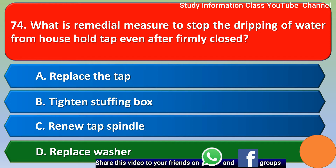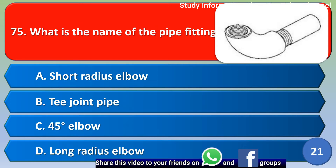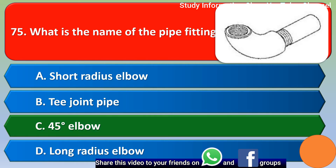Next question: What is the name of this pipe fitting? Option A: short radius elbow, Option B: T-joint pipe, Option C: 45-degree elbow, Option D: long radius elbow. The correct answer is Option C, 45-degree elbow.